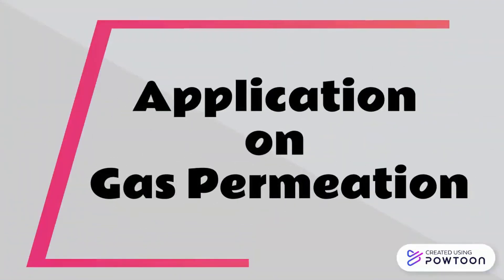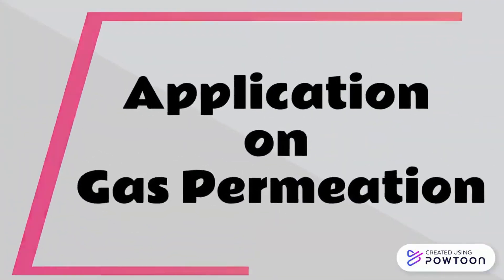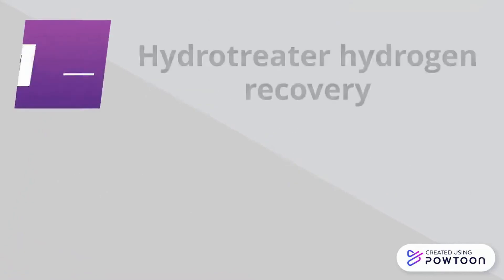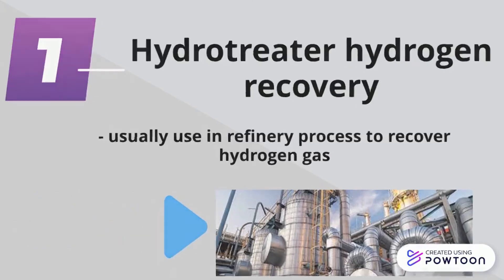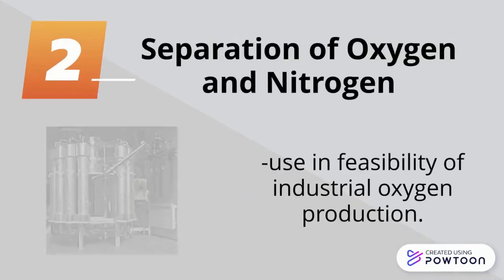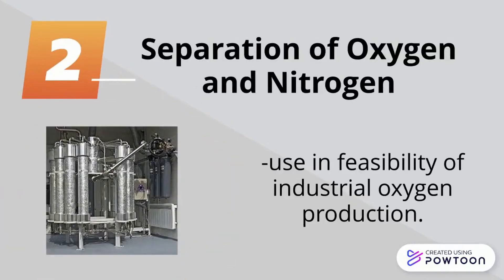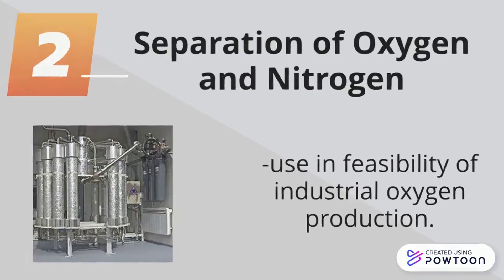Applications of gas permeation. First is hydrotreater hydrogen recovery — it is usually used in the final process to recover back the hydrogen gas. Second is separation of oxygen and nitrogen — it is used in the feasibility of industrial oxygen production.